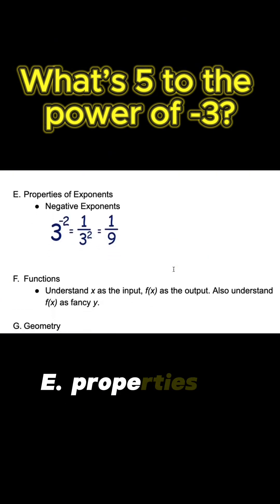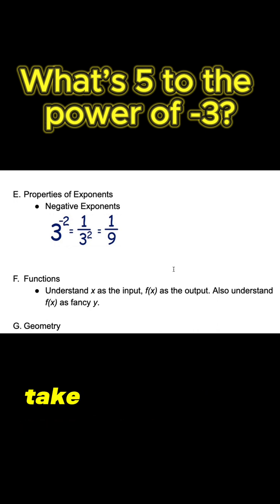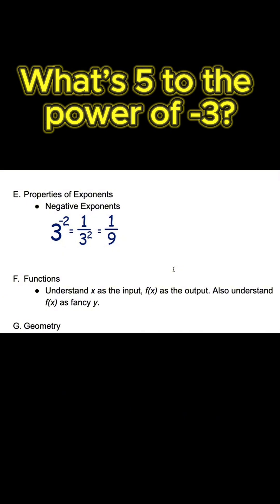So we've got basic concept E, properties of negative exponents. They do like to test you on negative exponents. Take a look at that, and we see that 3 to the power of negative 2 is just 1 over 3 squared, 1 over 3 to the power of 2.